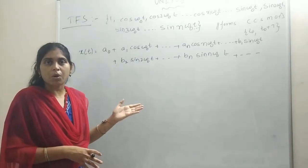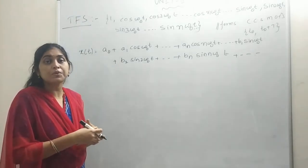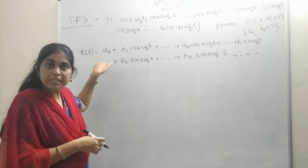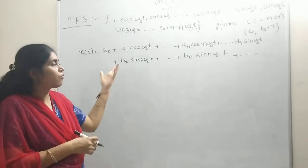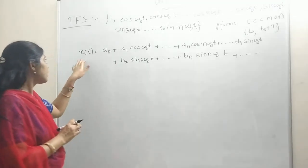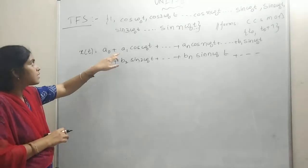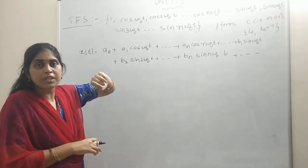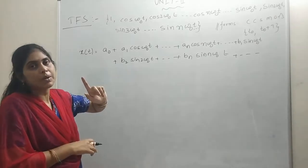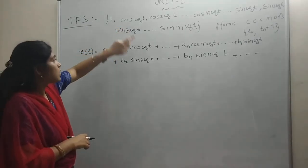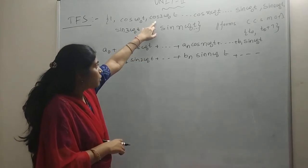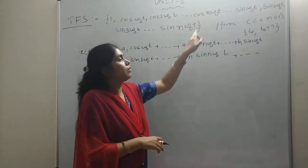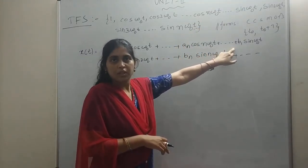This is the linear combination signal approximation concept using orthogonal functions. So x(t) equals a₀ — a₀ can be anything; later we will see how to find these constants. Here x(t) equals a₀ plus a₁·cos(ω₀t) plus a₂·cos(2ω₀t) plus a₃·cos(3ω₀t), and so on. The nth term is aₙ·cos(nω₀t) plus so on. The constants were discussed in terms of c₀, c₁, c₂ in the first chapter.